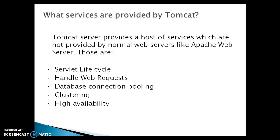Connection pooling facilitates re-use of the same connection object to serve a number of client requests. Every time a client request is received, the pool is searched for an available connection object, and it's highly likely that it gets a free connection object. Otherwise, either the incoming requests are queued or a new connection object is created and added to the pool, depending upon how many connections are already in the pool and how many the particular implementation and configuration can support. As soon as a request finishes using a connection object, the object is given back to the pool.